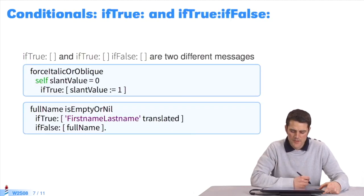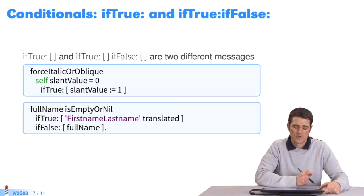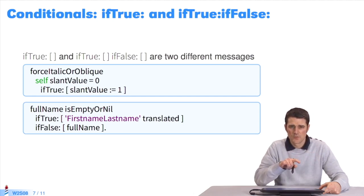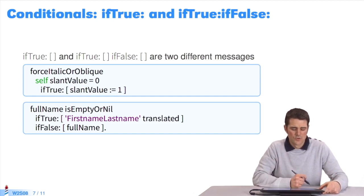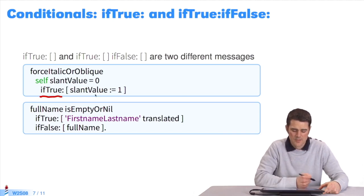Back to the message ifTrue:ifFalse:. There are different versions of these messages. There's a version with only ifTrue: with a block as a parameter, to return only the first part of the alternative. The message ifTrue:ifFalse: takes two blocks to return an alternative when the Boolean is true or false. This example sends the message ifTrue: with only one block to execute if the expression is true.